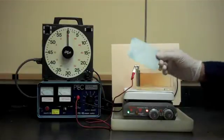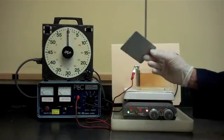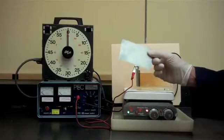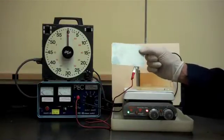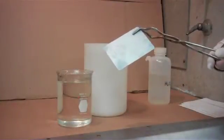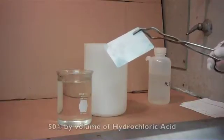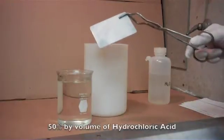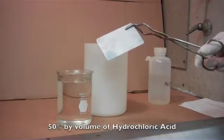In order to do this test we first have to remove the zinc coating that is present on the Hull Cell test panel, and we will do that by removing it in some dilute acid. Here is the Hull Cell test panel. We are going to immerse it in a 50% by volume solution of hydrochloric acid.